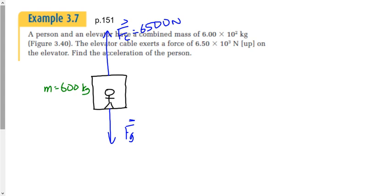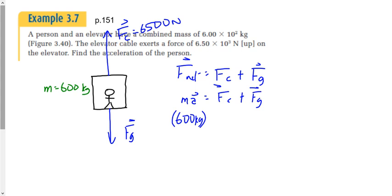Any more forces? Let's say the net force is equal to the sum of the forces. That's going to be FC plus FG. M times A is equal to FC plus FG. What's the mass we use here? 600 kilograms. But wait a second. If we use 600 kilograms, aren't we finding the acceleration of the elevator? What are we looking for? The acceleration of the person.